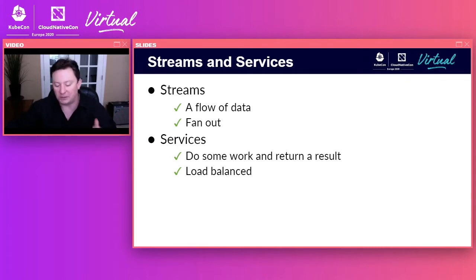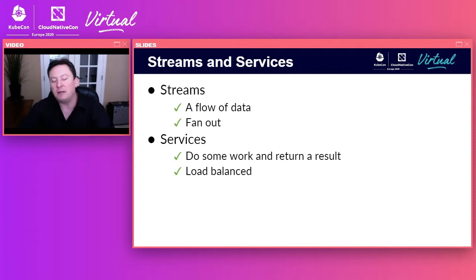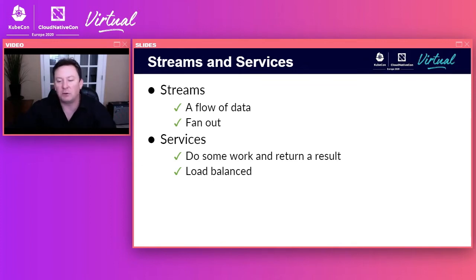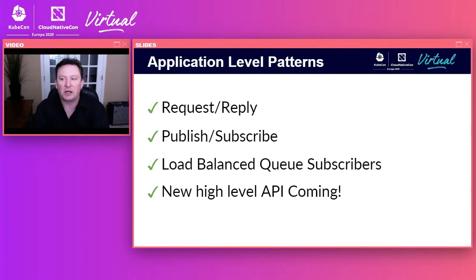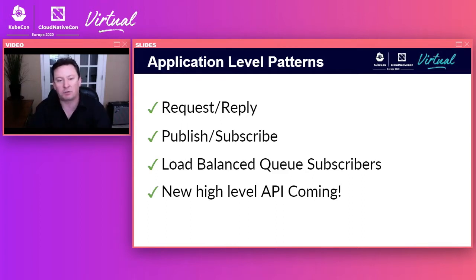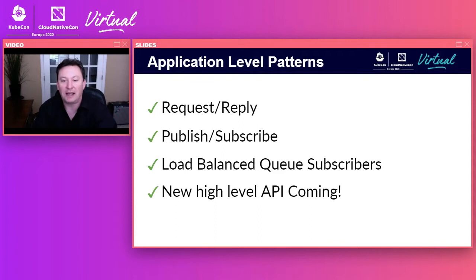Streams are a flow of messages going out, and they can fan out — you might have a stream fanning out to a thousand, ten thousand, or a million subscribers. Services are where you want to ask an application to do some work and return a result. Services are the most common pattern we see, and they can be load balanced. At the code level, these fall into request-reply for services and RPC, publish-subscribe for streams, and load-balanced queue subscribers.